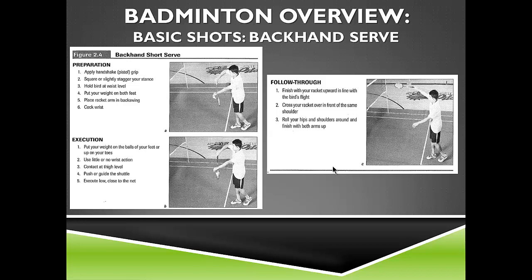The backhand serve is performed right at the short line. It uses the handshake grip but with a square stance rather than an elongated front-to-back stance. The birdie is held at waist level, dropped and contacted just below waist level with little or no wrist action. It's a short serve, designed to land just beyond the short line on the opposing side. Contact is about thigh level; you push the shuttle across the net, traveling low and close to the net, raising the racket to eye height on the follow-through while rolling hips and shoulders forward.